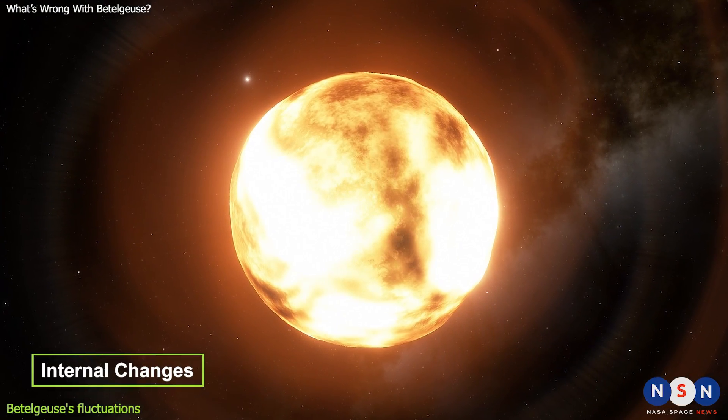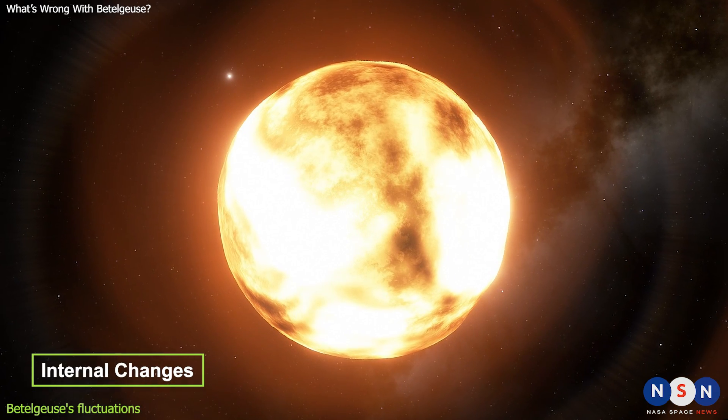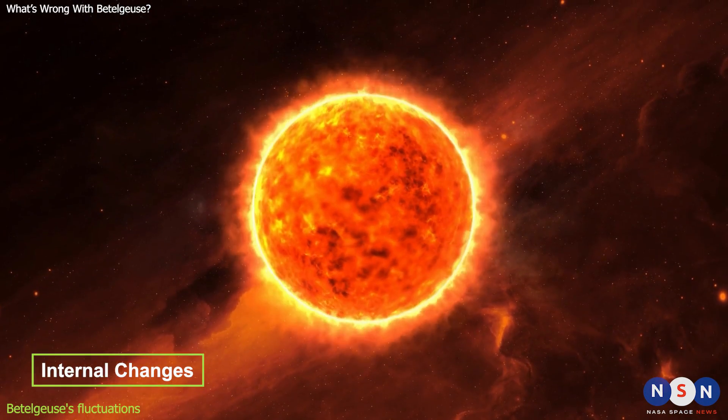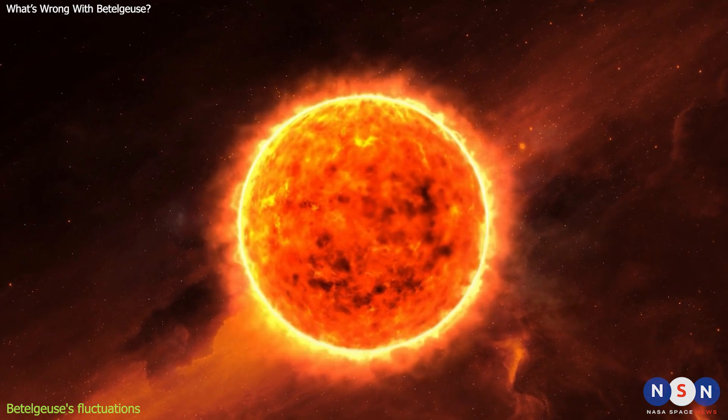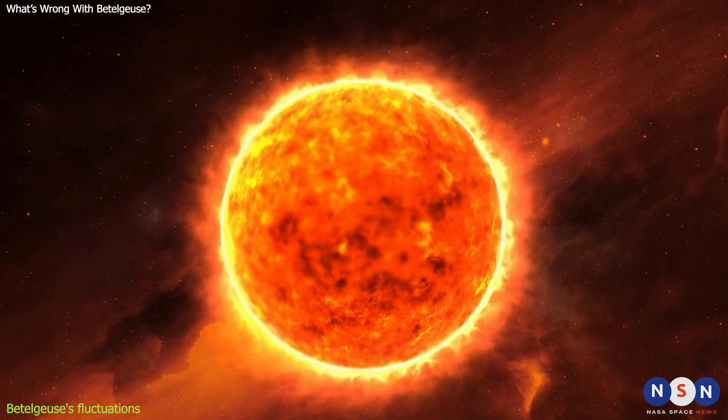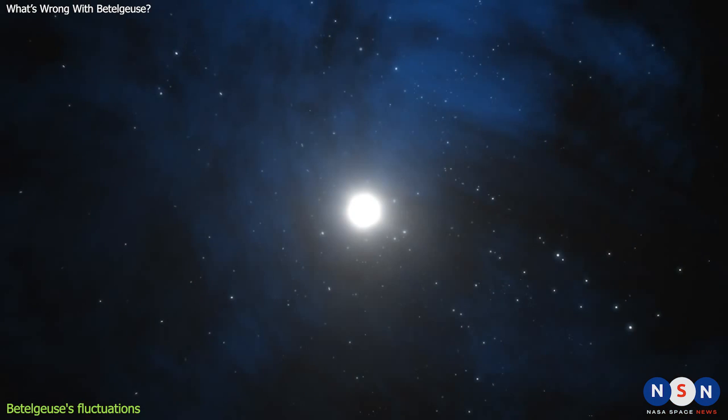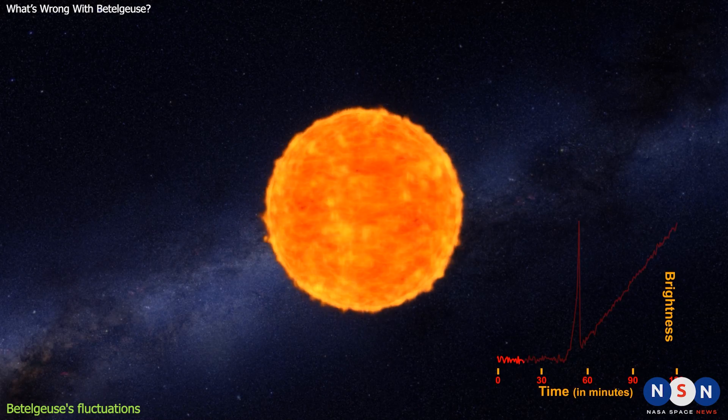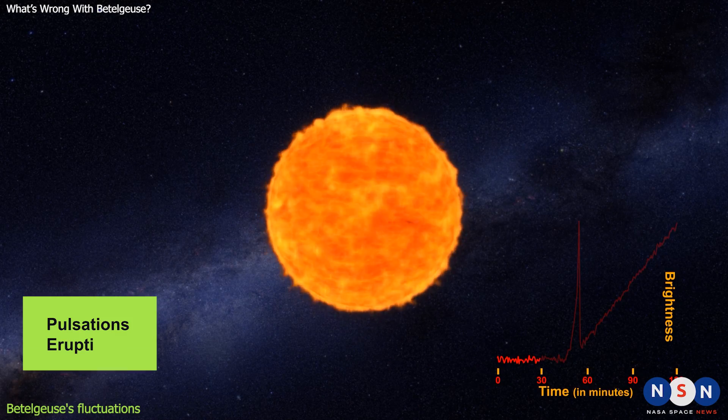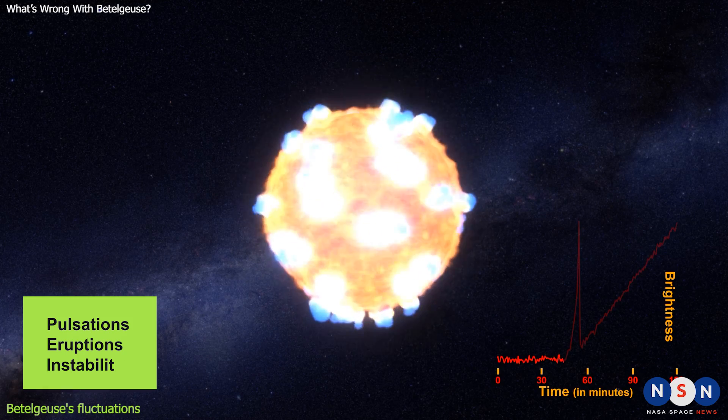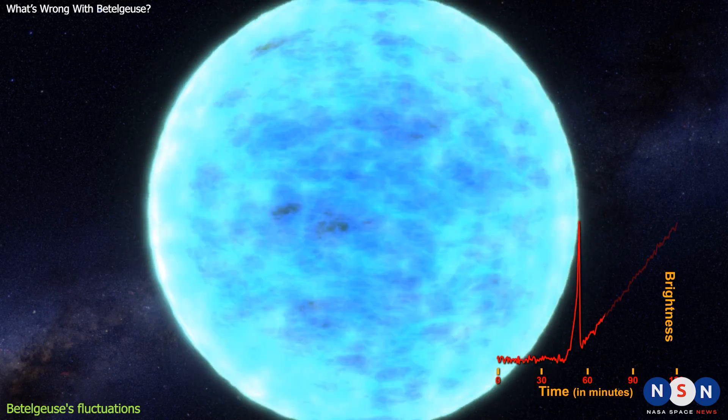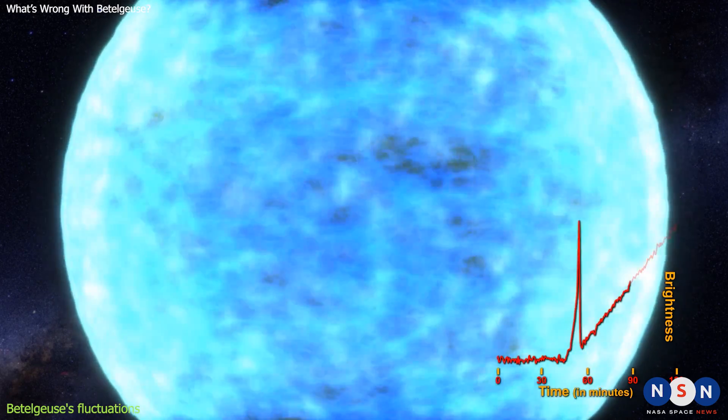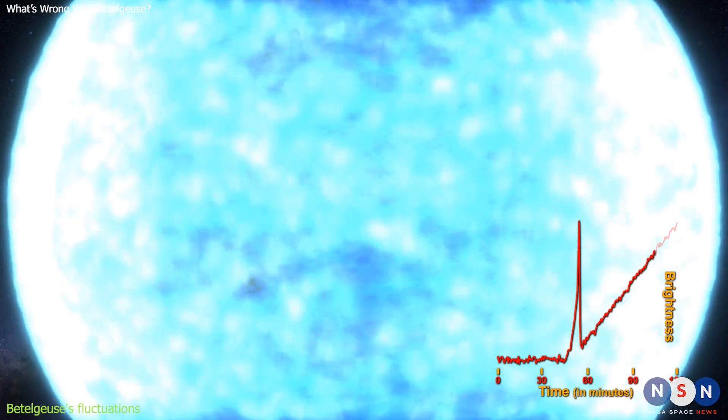And finally, it could be that Betelgeuse is undergoing some internal changes that affect its structure and stability. Betelgeuse is a very old star that has almost run out of fuel to burn. It's currently fusing helium into carbon and oxygen in its core, but eventually it will run out of helium too. When that happens, the core will collapse and trigger a supernova explosion. But before that, the star may undergo some pre-supernova stages, such as pulsations, eruptions, or instabilities that can alter its brightness. These are some of the possible causes of Betelgeuse's fluctuations, but there may be others that we don't know yet. Astronomers are still observing and analyzing the star to find out more clues and answers.